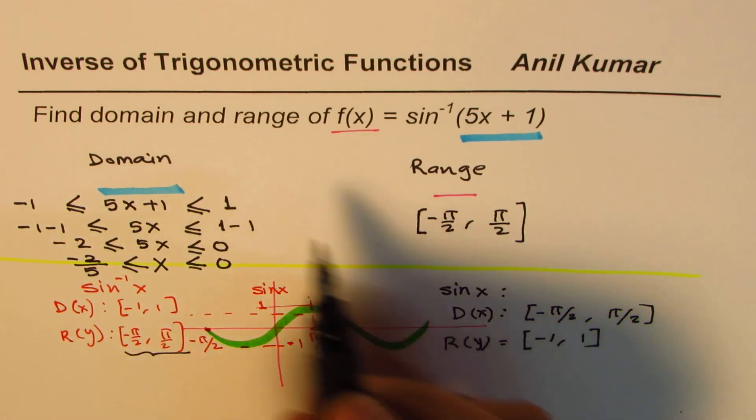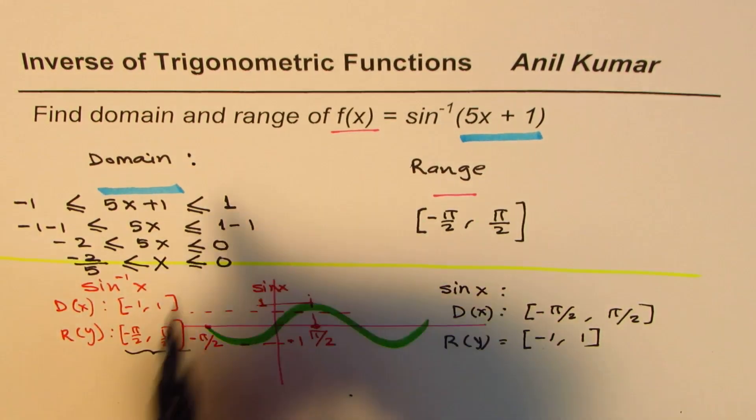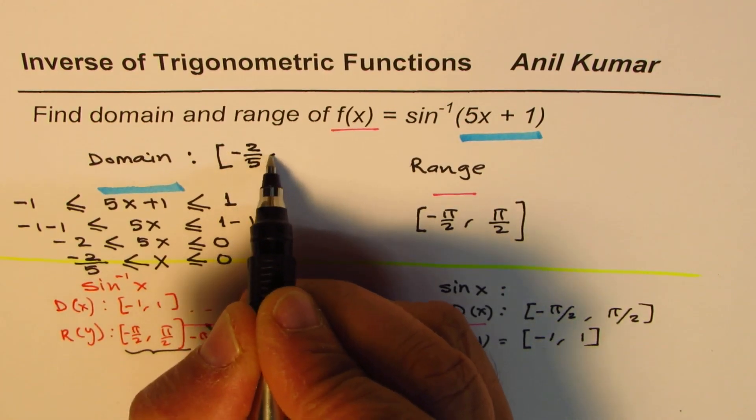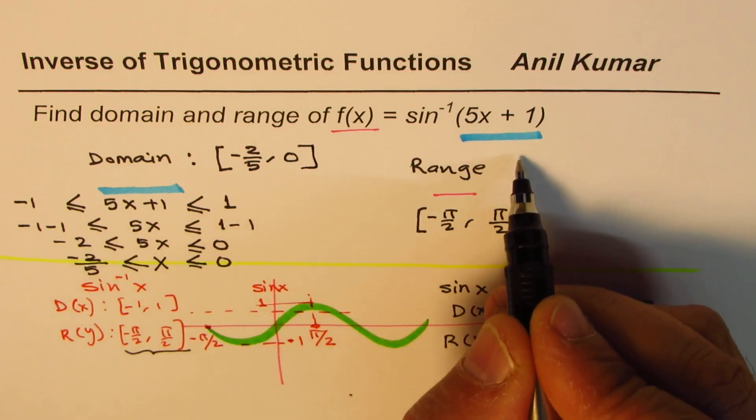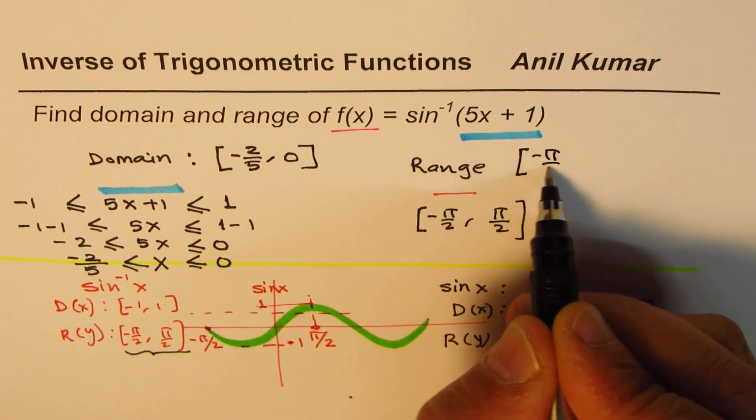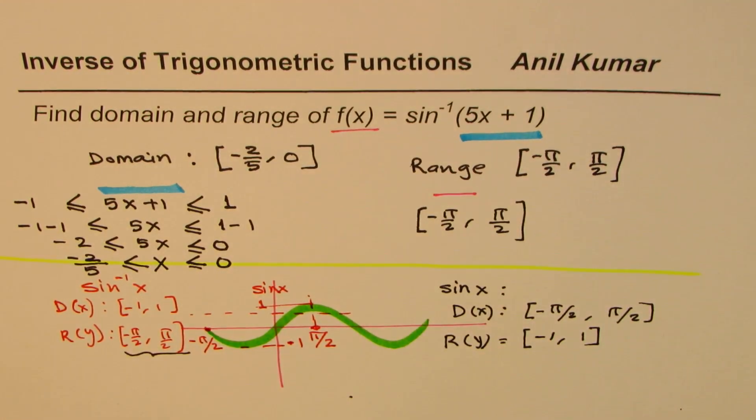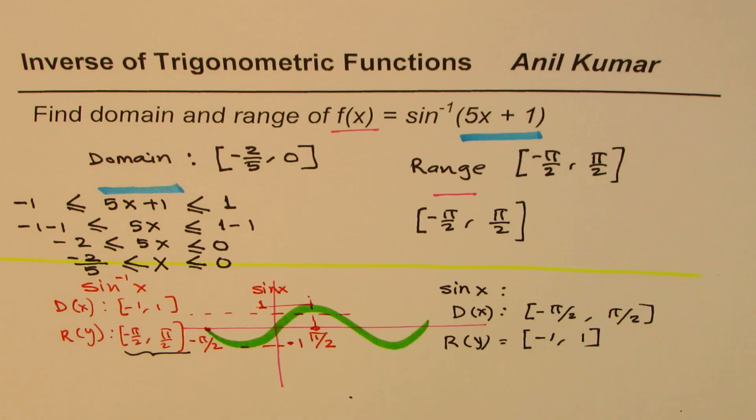So the domain of this function is from minus 2 over 5 to 0. So we get domain of this function is from minus 2 over 5 to 0, and the range is from minus pi by 2 to plus pi by 2, both included. I hope this video clearly explains the concepts and how to find domain range for inverse of trigonometric functions.